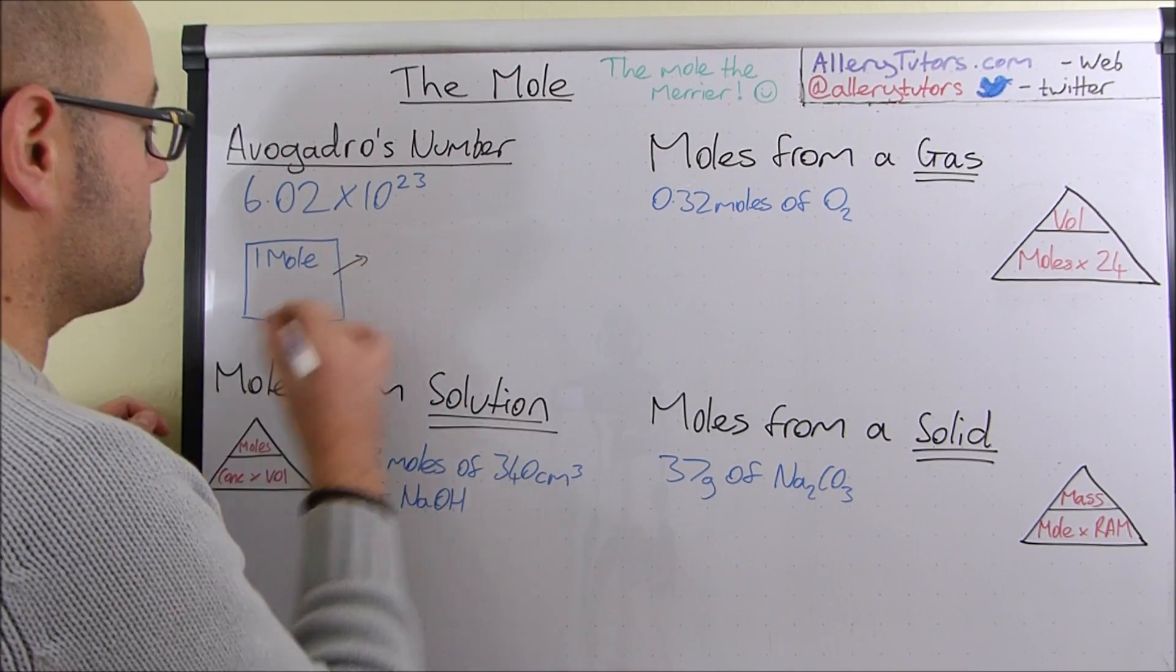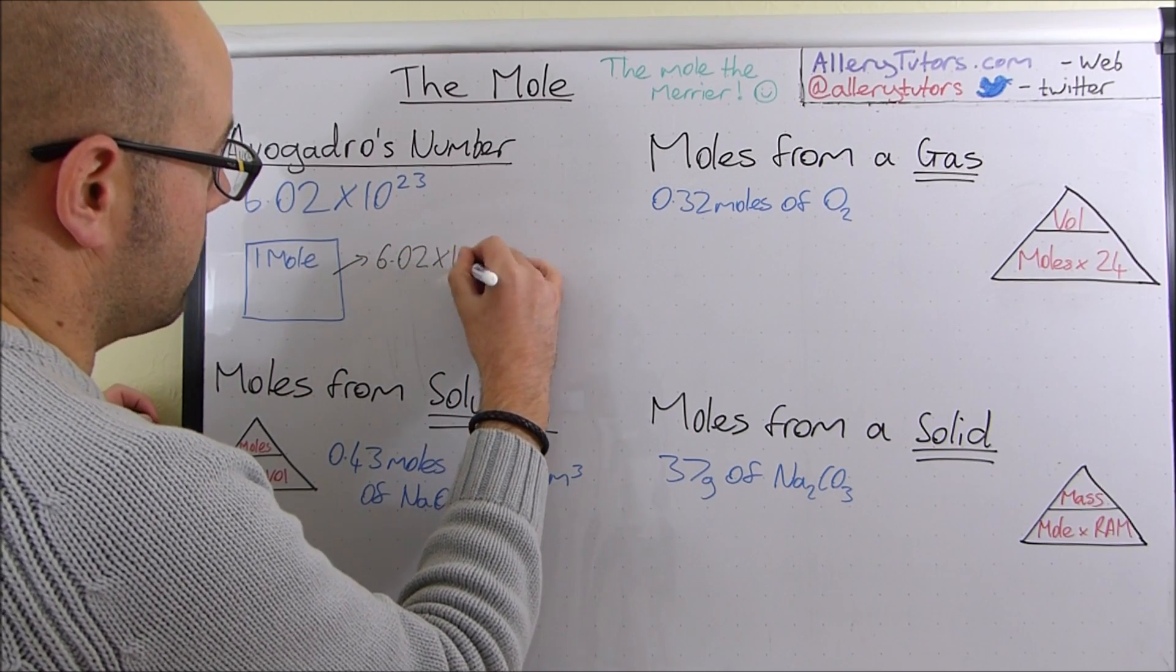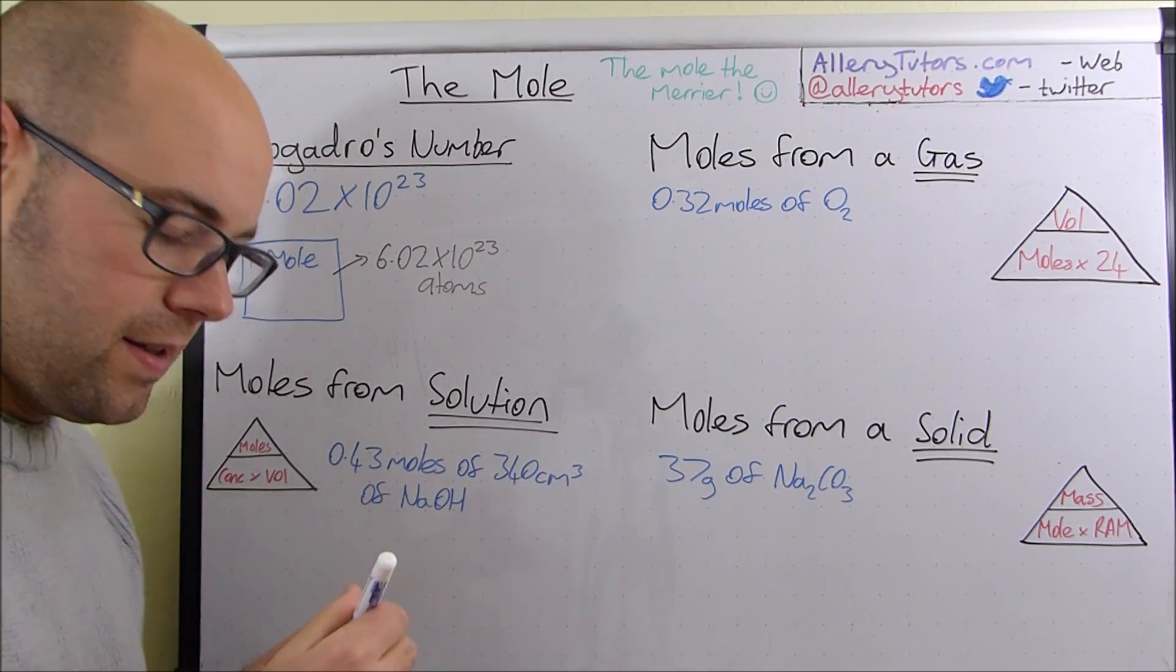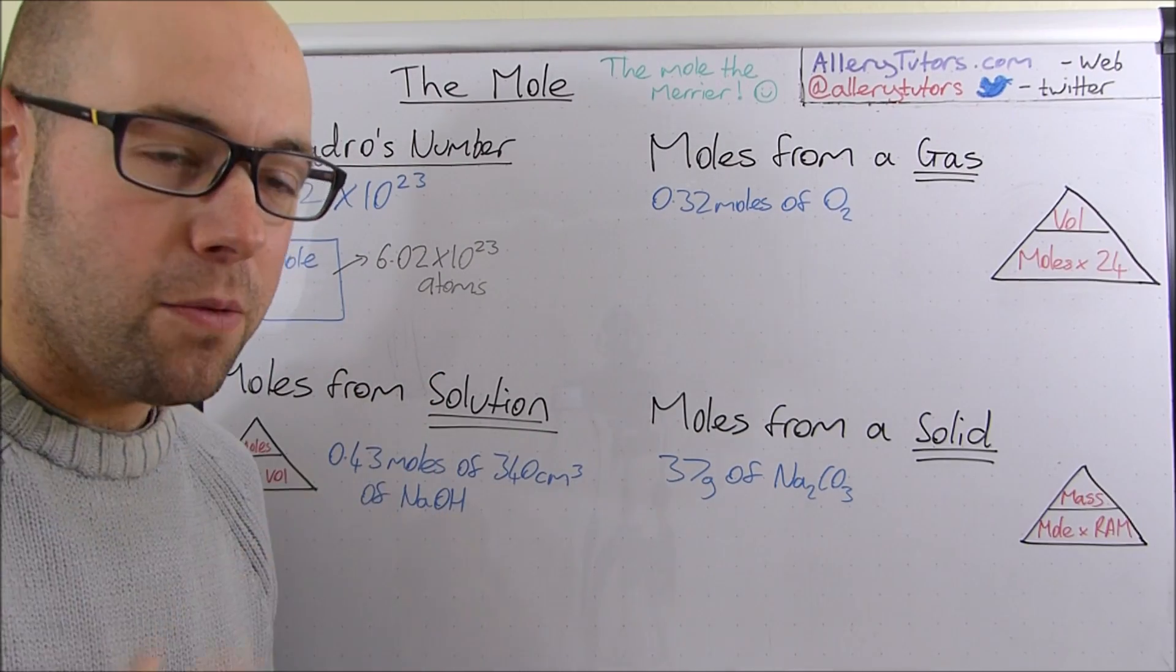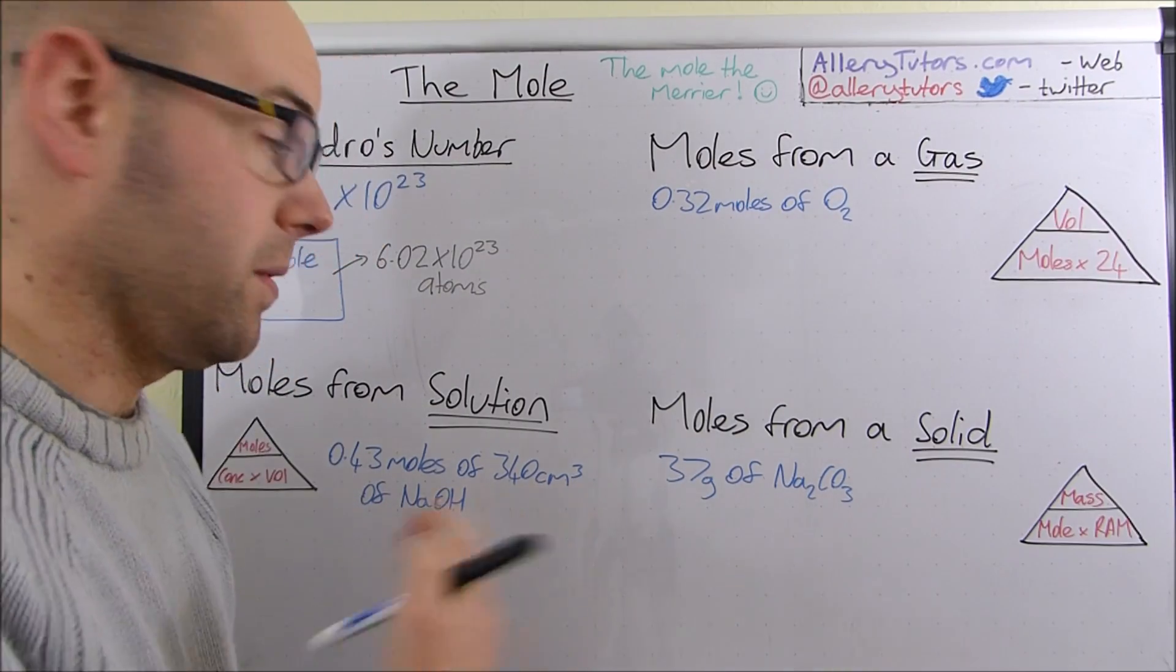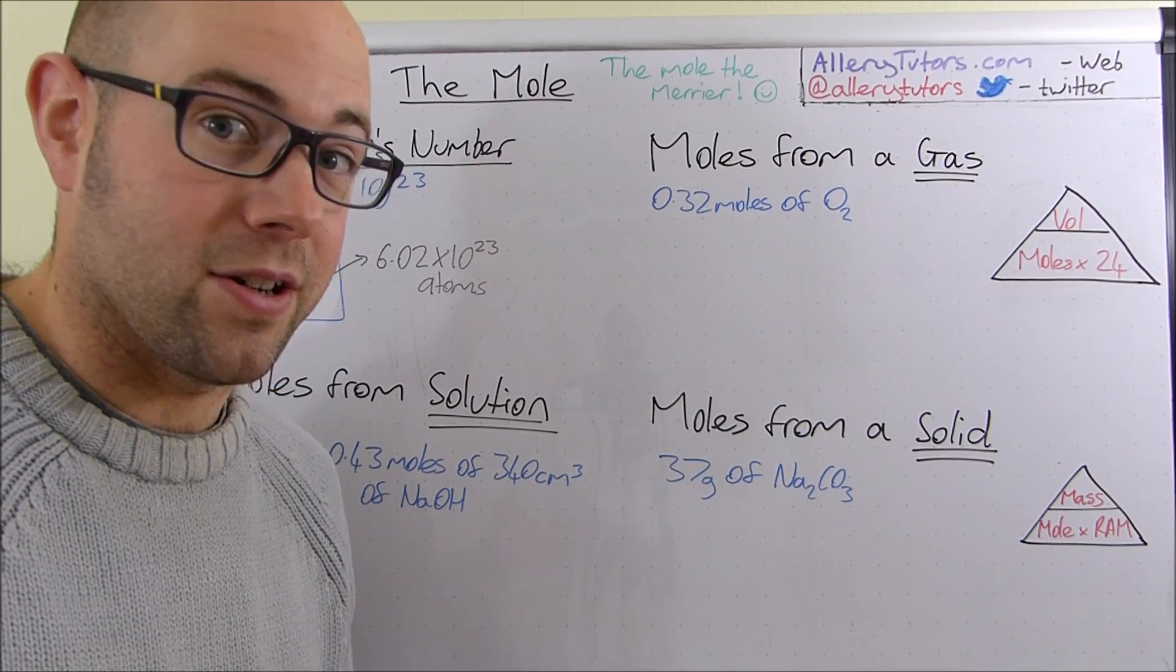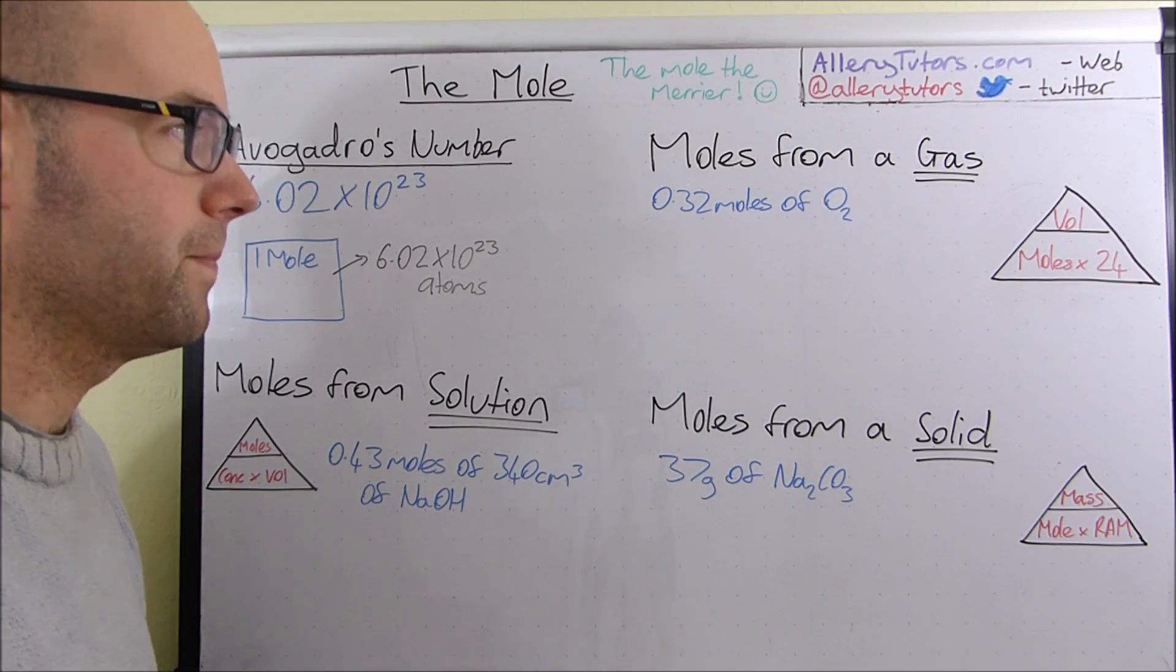So one mole of any substance always has 6.02 times by 10 to the 23 atoms inside it. Okay, and it's as simple as that. And actually, we'll come back to that in a minute, because you may be asked to work out how many atoms we have in a fixed amount of space. So it could be in a solution, it could be in a container of gas, or whatever. So I'll tell you how we can use that as well.